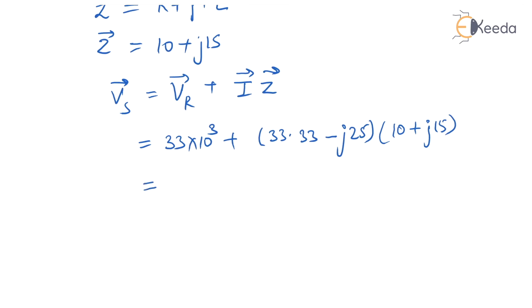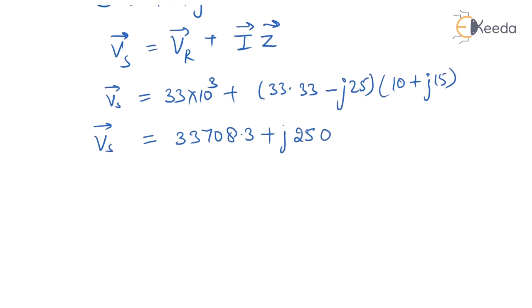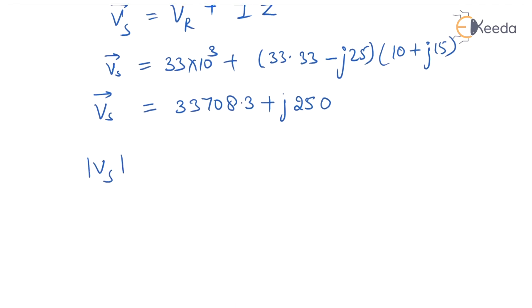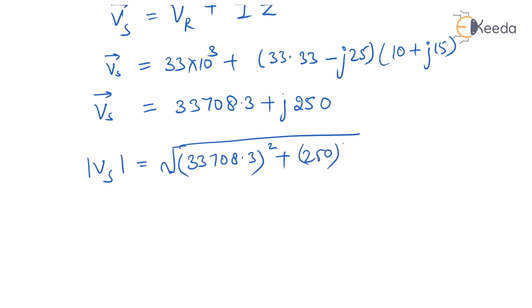Substituting all values: VS equals 33 times 10 to the power 3 plus (33.33 minus j25) times (10 plus j15), which gives 33708.3 plus j250. The magnitude of sending end voltage is under root of 33708.3 squared plus 250 squared, which equals 33709 volt.